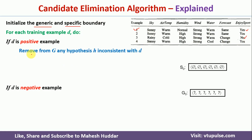If the example is positive, first we go to the generic boundary G and check whether the example is consistent with each hypothesis present on that boundary. If it is consistent, we do nothing. If it is inconsistent, we remove that particular hypothesis. That is, we remove from G any hypothesis H that is inconsistent with the current example D.